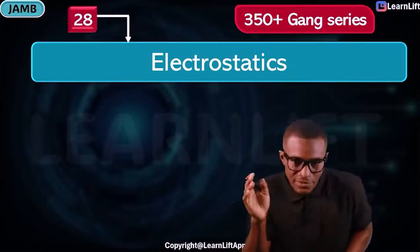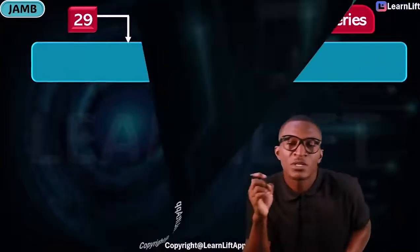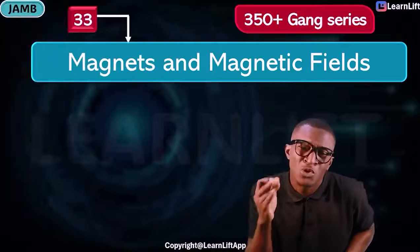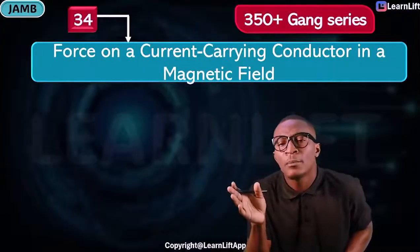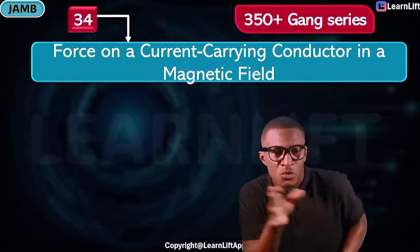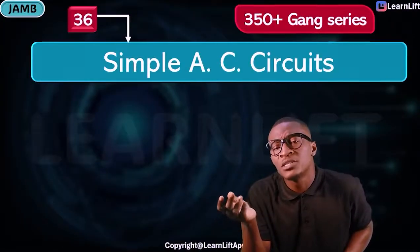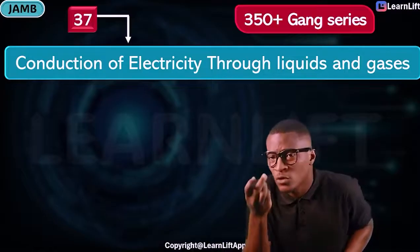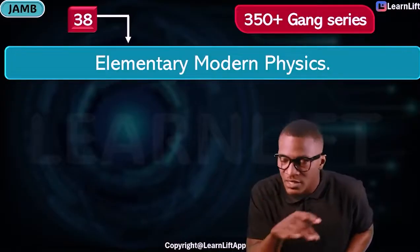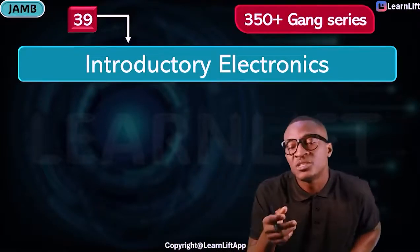After that we'll talk about electrostatics, and then we start the electricity series — capacitors, electric cells, current electricity, electric energy and power. After that we'll talk about magnets and magnetism, which is a very large topic. We'll cover force on a current-carrying conductor in a magnetic field, where F equals qvB. Then electromagnetic induction, simple AC circuits, conduction of electricity through liquids and gases, elementary modern physics, and we wrap up with chapter 39 — electronics, including semiconductors and logic gates.